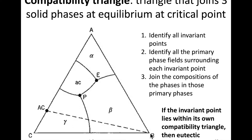For point P, it is surrounded by AC, beta, and gamma. AC and beta are as before, and gamma has a composition of pure C. We join those three points — AC, B, and C — forming the small triangle on the bottom side of the dashed line. This is the compatibility triangle for the peritectic, while the upper triangle is the compatibility triangle for the eutectic.